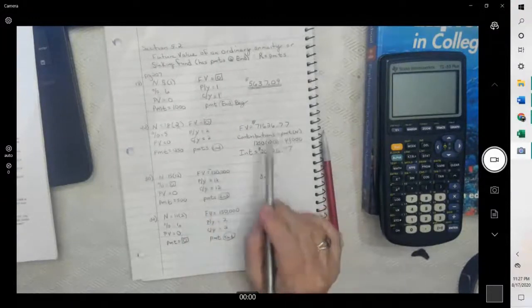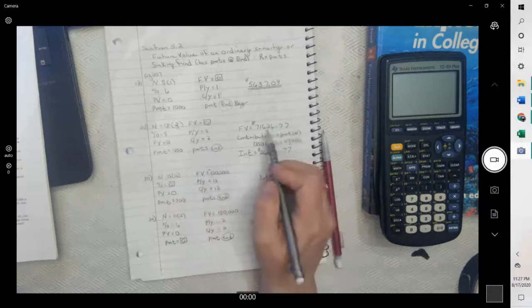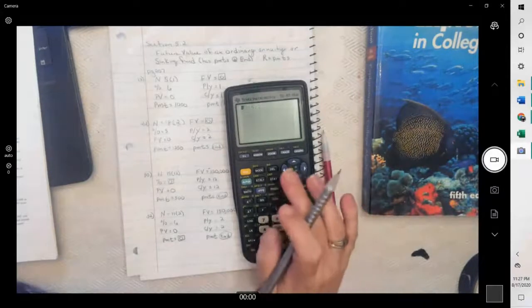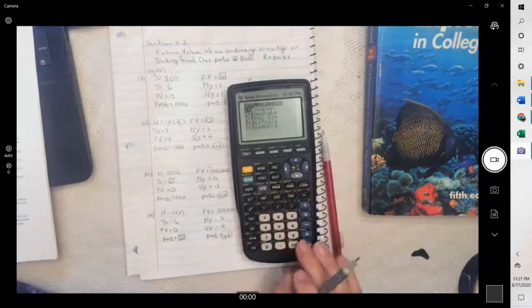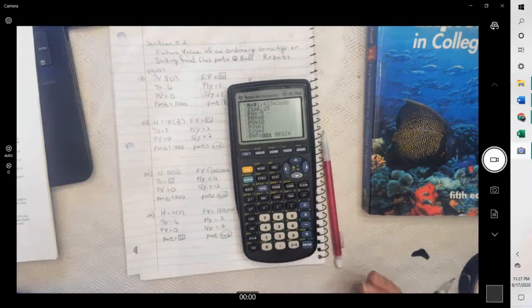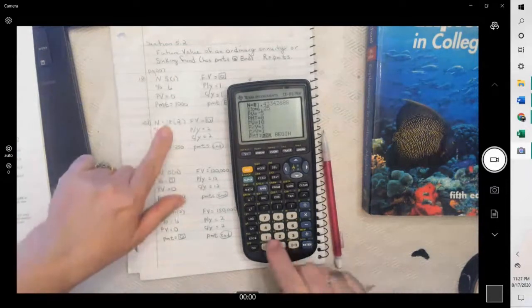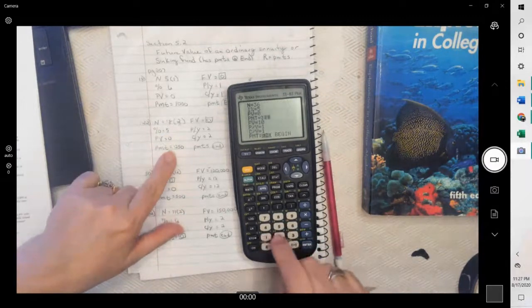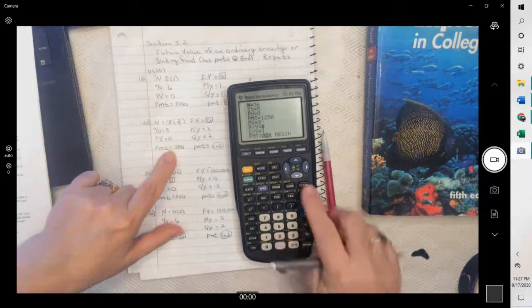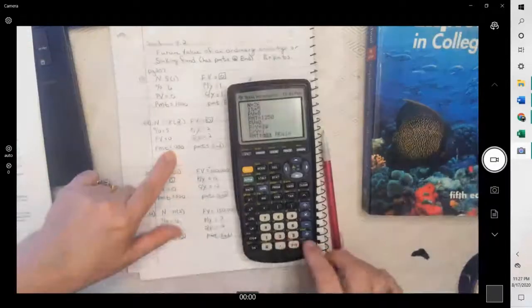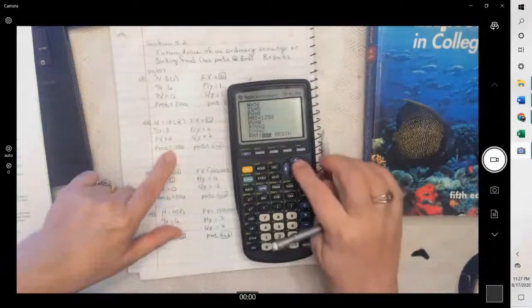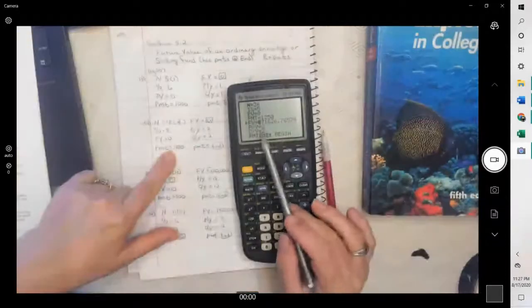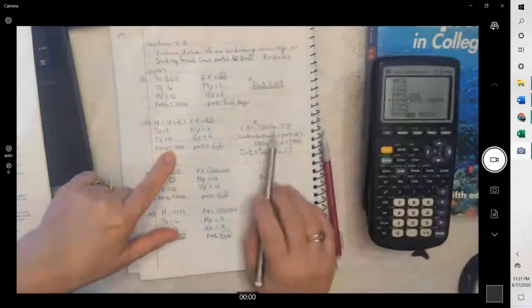Now if we solve this, type it all in. So remember when you're typing it, tap Finance, hit enter, TVM Solver, hit enter, and then you type your values. 18 times 2, 5, 0, 1250, future value was 0, and then payments per year and compounding per year are 2. So I'm solving future value, alpha and enter, and I get 71,626, which is what we got.